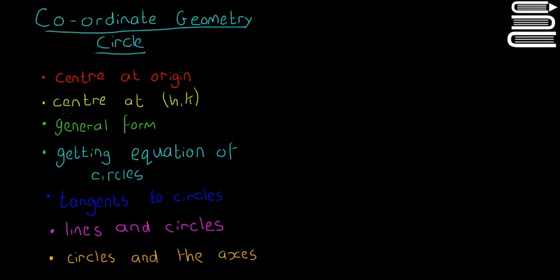We're going to break it up into these topics. First, circles that have their centre at the origin, then circles with their centre anywhere, which we call (h,k), where that's the x and y coordinate of the centre. Then the general form of the circle equation, and how to get the equation of circles.